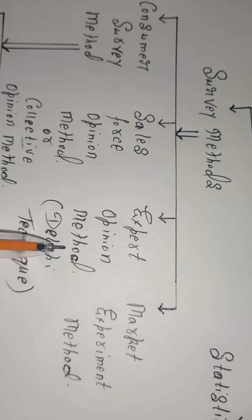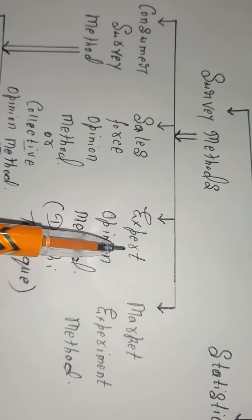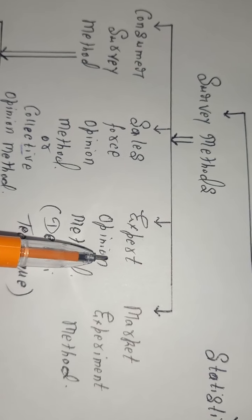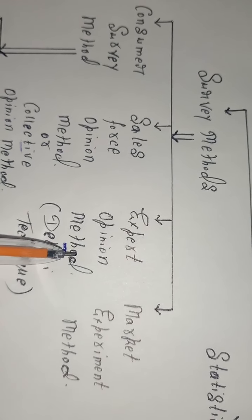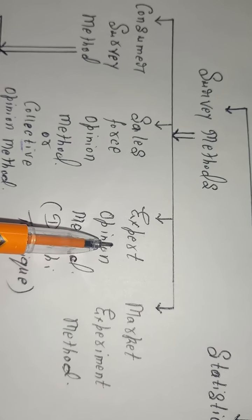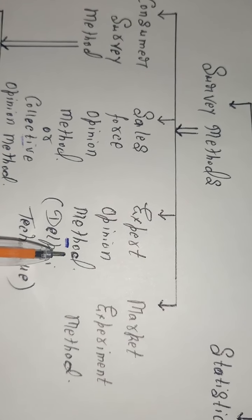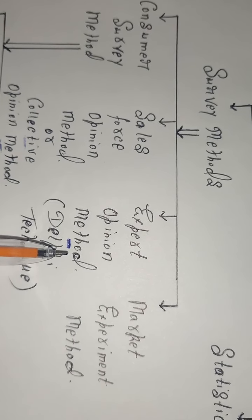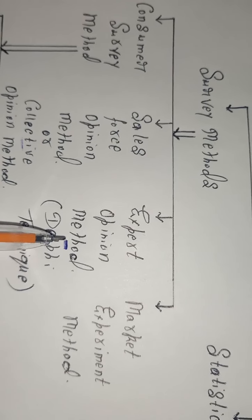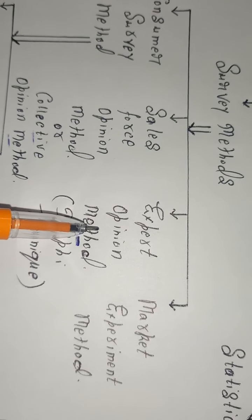The third method is the expert opinion method. Here, the experts' opinion is taken within the market. The company selects a panel of experts — for example, eight experts of that particular field. A question is put to them regarding demand in a future period of time. The experts provide their opinions, which are collected on a common platform and shared with each and every expert. Then experts provide their opinions again, and this process continues until the opinions converge.